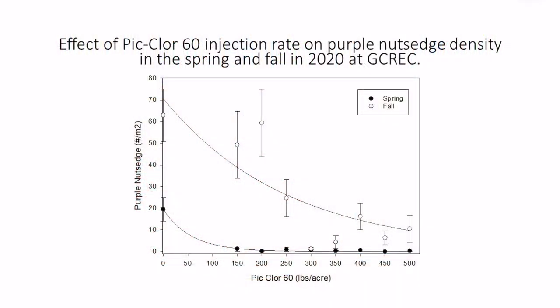The first graph looks at the effects of Pic Clor-60 rate on purple nutsedge density in the field. The x-axis — the line along the bottom — has Pic Clor-60 rate in pounds per acre from 0 up to 500 pounds. The y-axis has purple nutsedge density in number per square meter. The black dots represent density in the spring, and the clear dots represent the fall experiment.